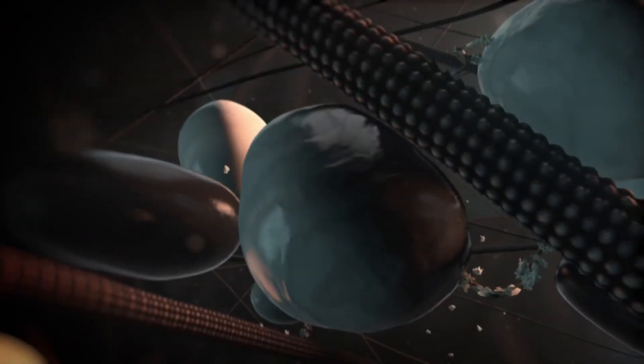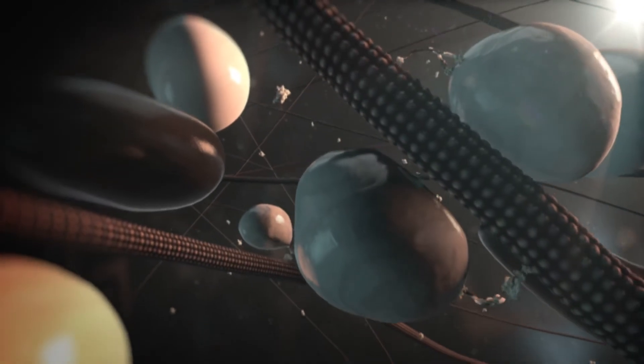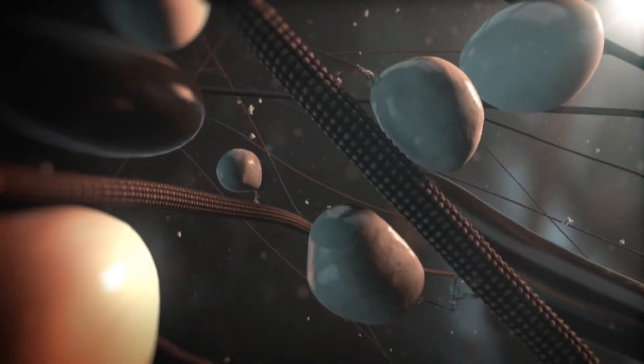Kinesin and dynein move in opposite directions. Dynein moves towards the minus-end, whereas most kinesins move towards the plus-end. Therefore, the orientation of the microtubules helps to direct polarized transport.